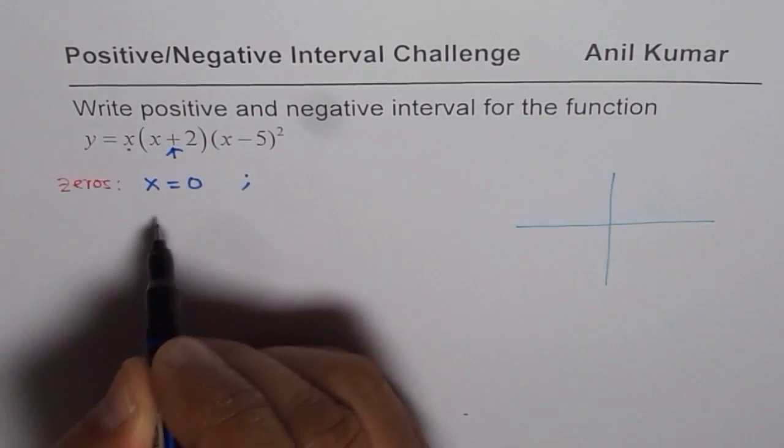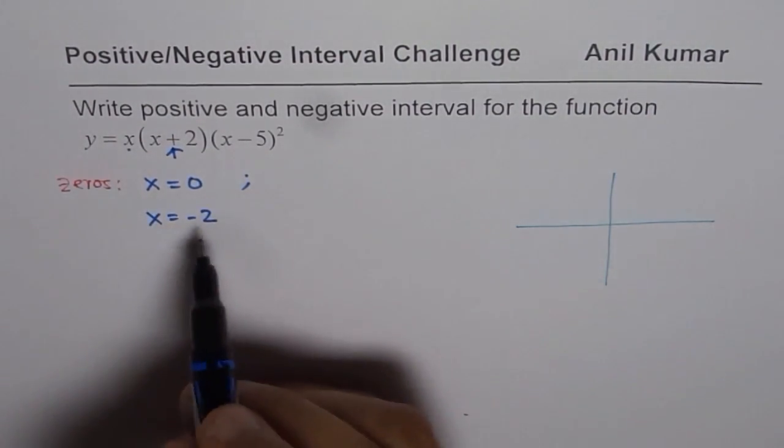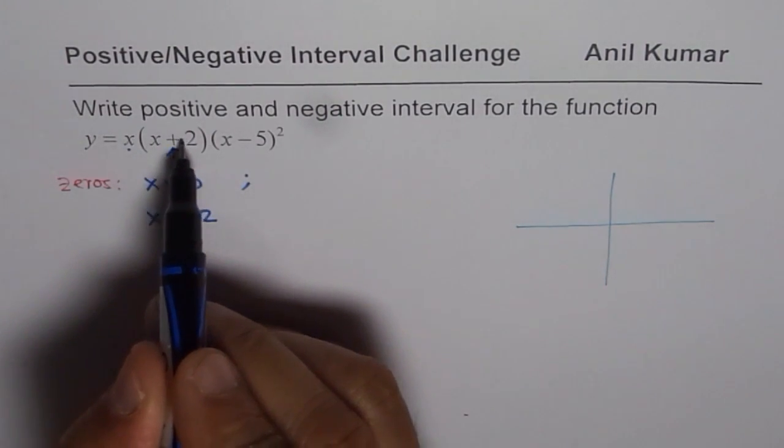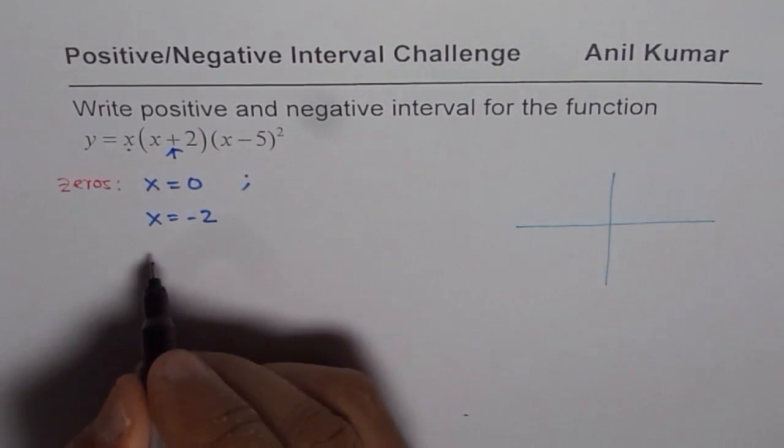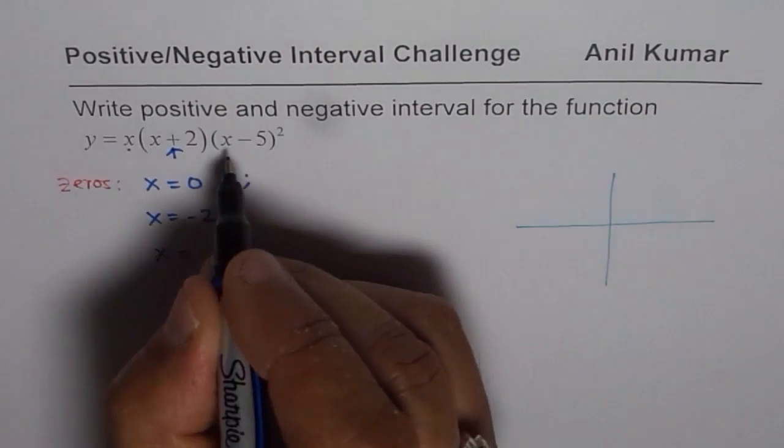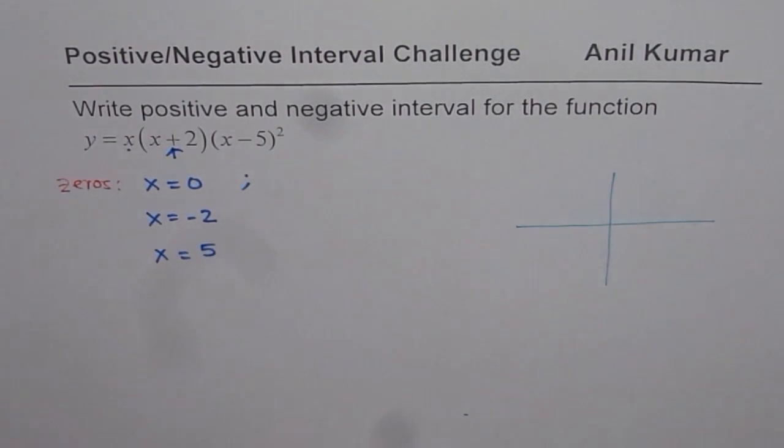The other one is because of this, which should be x equals minus 2. If I substitute minus 2, I get 0. 0 times anything is 0. And the third factor is x minus 5, which is 0 for x equals 5. So these are the zeros for us.